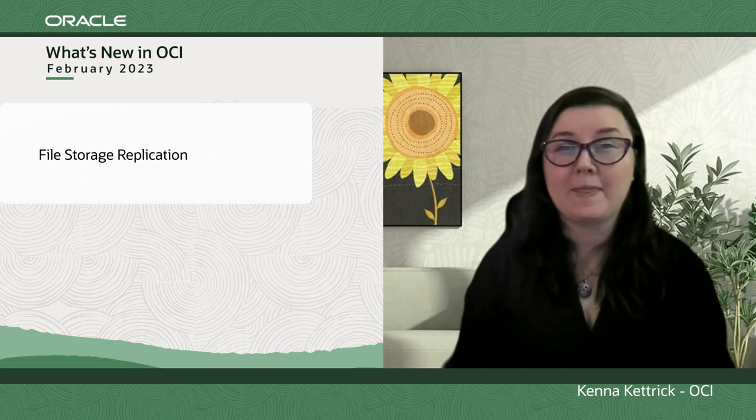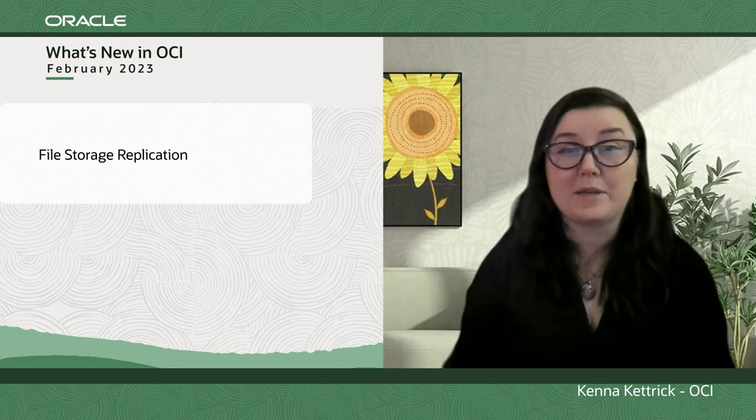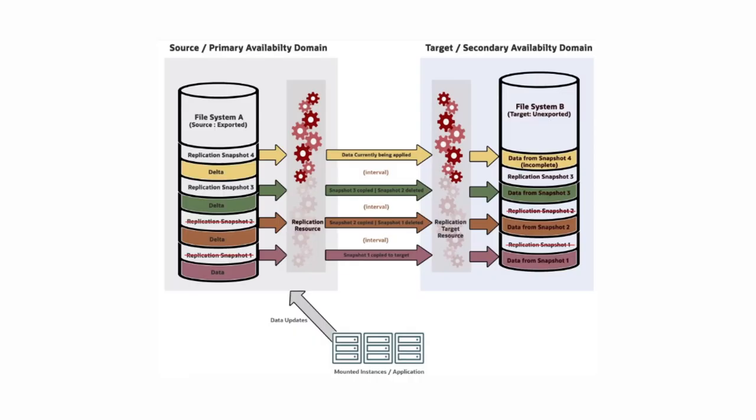The OCI File Storage Service now supports cloud-native asynchronous replication as a feature of our highly available Elastic File System. This fully managed feature allows you to replicate your source file systems to target file systems in different availability domains. These targets can exist across multiple availability domains within a region or across different regions in your tenancy.